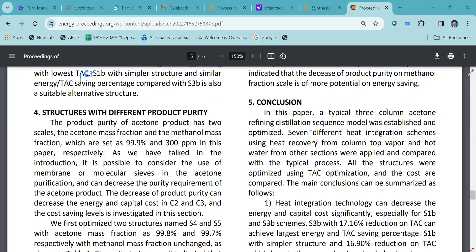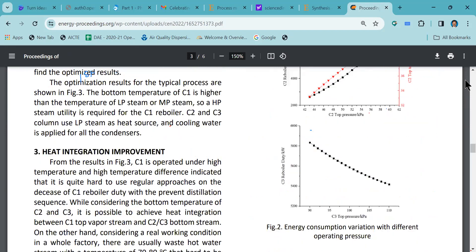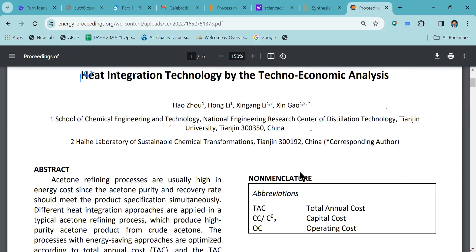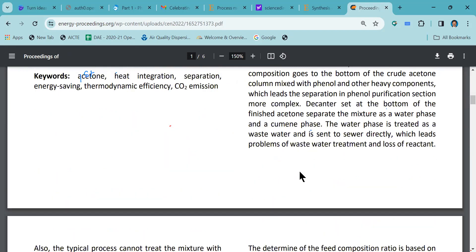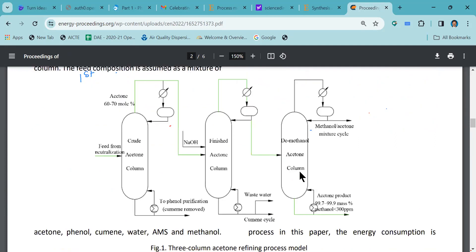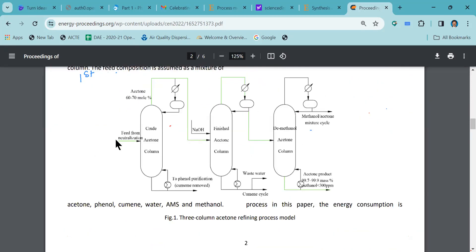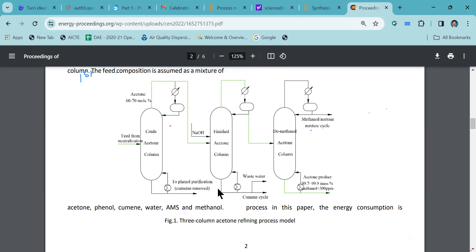Then pick up and try to go into the sections. After looking at the abstract and conclusions, now try to go down and see the figures. First of all, you can see the pictorial diagrams which are represented. This is one pictorial diagram showing a three-column acetone refining process model. By looking at this particular schematic, we will be in a position to understand in a very concise manner.